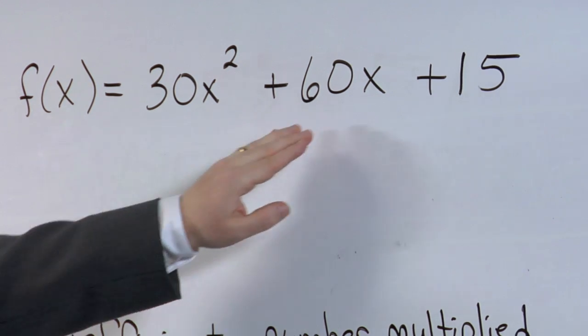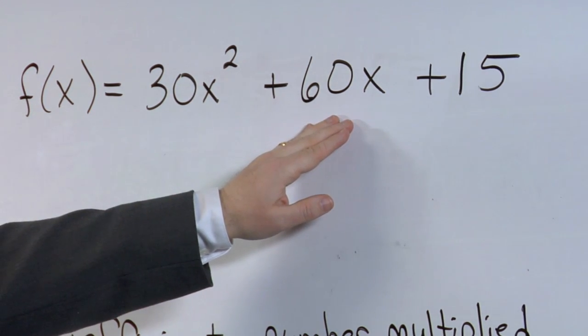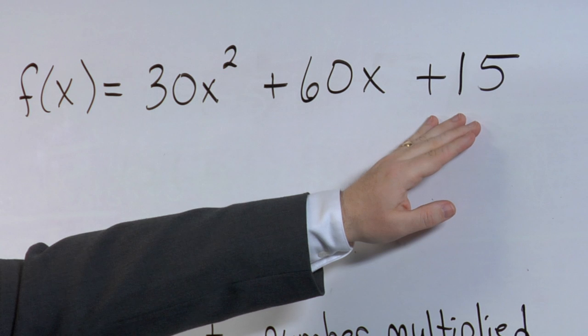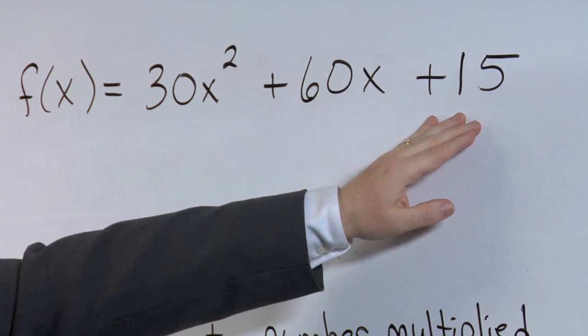The second term is 60 times x, so therefore 60 is a coefficient. And the last term is just 15. Well, since there's no variable there, it must be a constant.